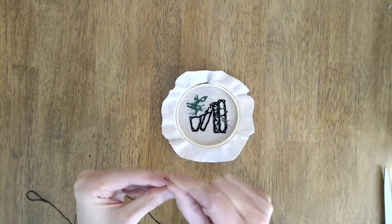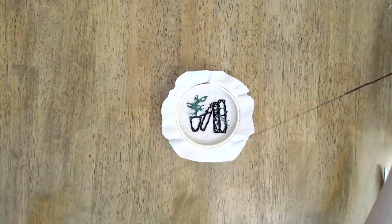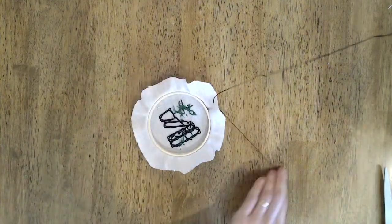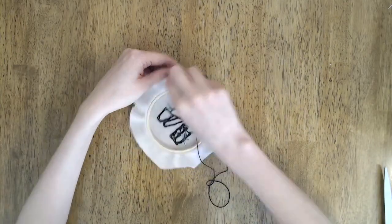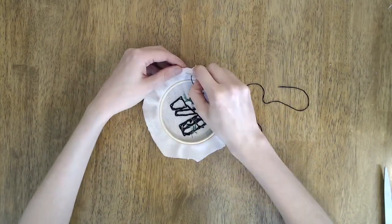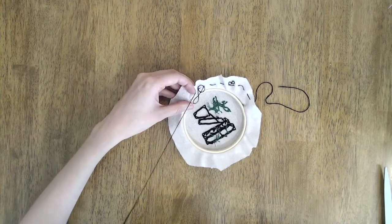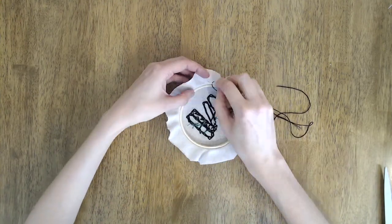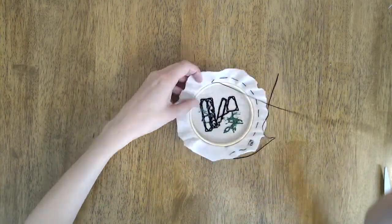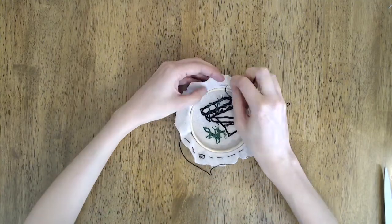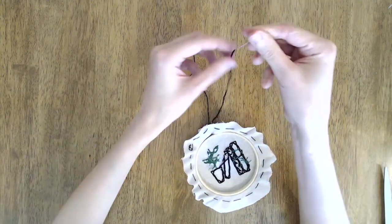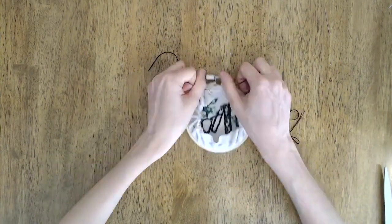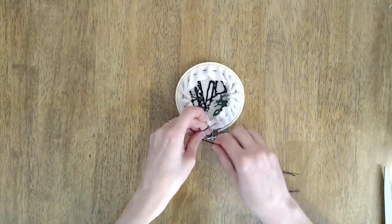But if you don't have glue, I'm going to show you another way to finish the hoop. So you'll want to trim the fabric all the way around, thread a needle with floss, and then run a loose stitch around the perimeter of the fabric about a half inch from the edge. When you've gone all the way around, you'll pull the ends of the floss taut to cinch the fabric and tie.